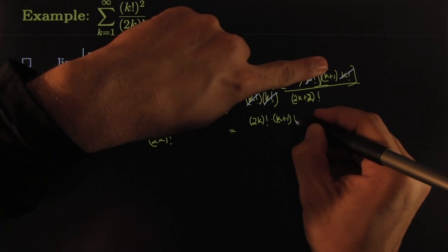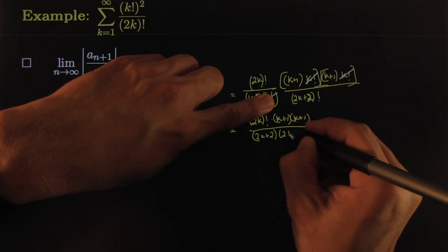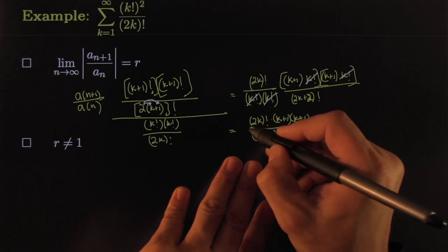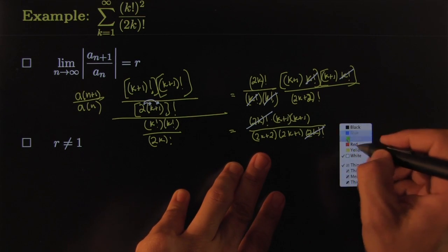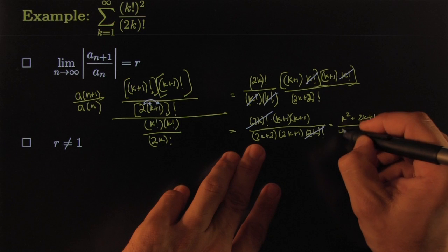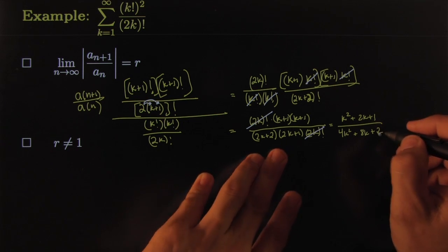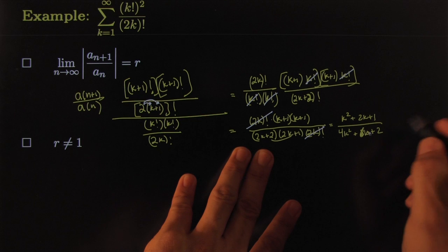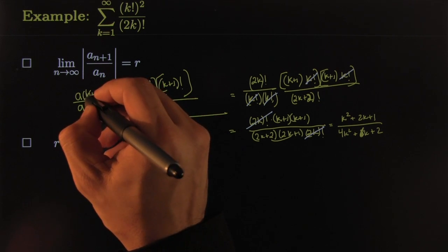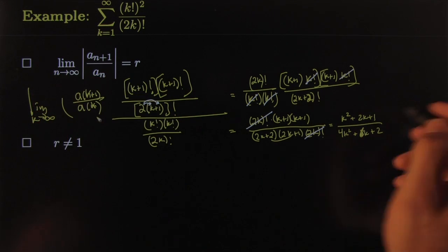After cancellation, I have (2k)! times (k+1) times (k+1) in the numerator — that's (k+1)² — all over (2k+2) times (2k+1) times (2k)! in the denominator. The (2k)! clearly cancels. This simplifies to k²+2k+1 all over 4k²+6k+2... wait, that's 4k²+6k+2. And of course, all along we're taking the limit as k goes to infinity.